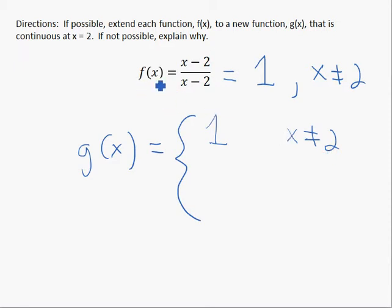Any x value you plug into f, you're going to get back 1 except when you plug in 2. And since I want this thing to be continuous everywhere, I want to define it at 2.